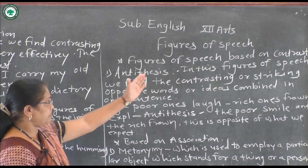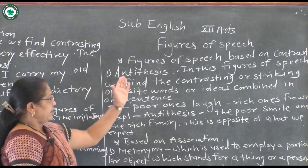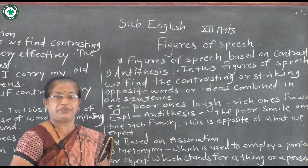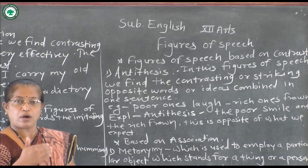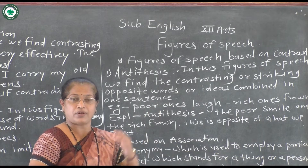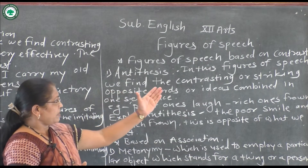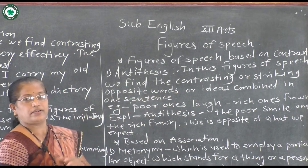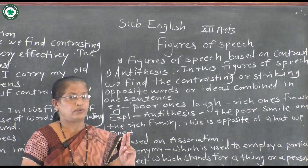The second type is figures of speech based on contrast. The first one is antithesis. In antithesis, there are two opposite words, two opposite thoughts, two opposite ideas used in this figure of speech. The definition: we find two contrasting, striking opposite words or ideas combined in one sentence.